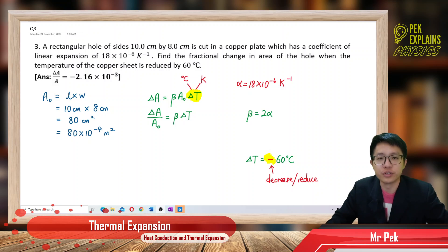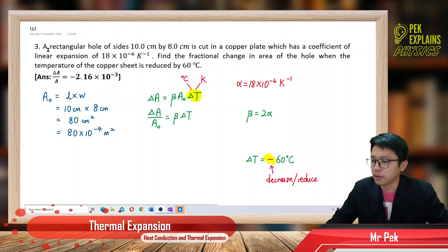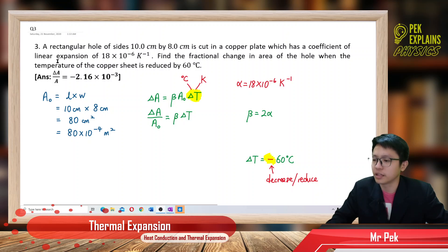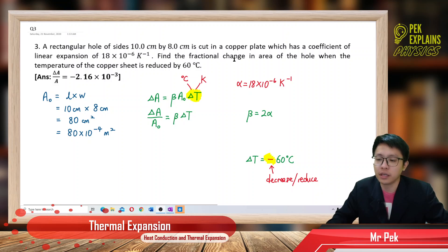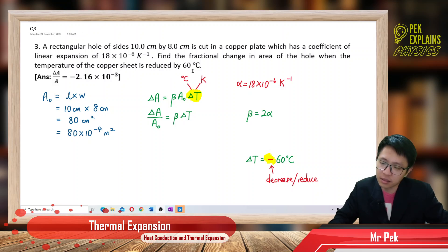Question 3. In thermal expansion, a rectangular hole of sides 10 cm by 8 cm is cut in a copper plate which has a coefficient of linear expansion of 18×10⁻⁶ per Kelvin. Find the fractional change in area of the hole when the temperature of the copper sheet is reduced by 60 degrees Celsius.